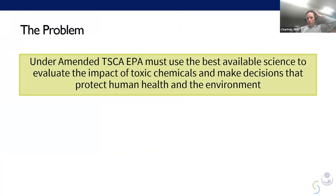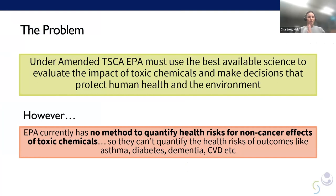A key issue we've been focused on here at PRHE is how EPA doesn't quantify health risks for non-cancer health effects for toxic chemicals at the moment. What that means is they don't quantify the number of people at risk of outcomes like asthma, diabetes, dementia, and cardiovascular disease at different levels of exposure. Therefore, they can't quantify the benefits from reducing the risks from those health outcomes when they go to regulate.